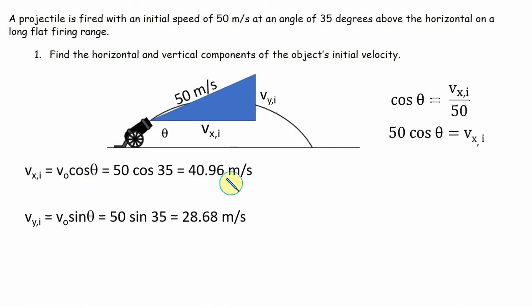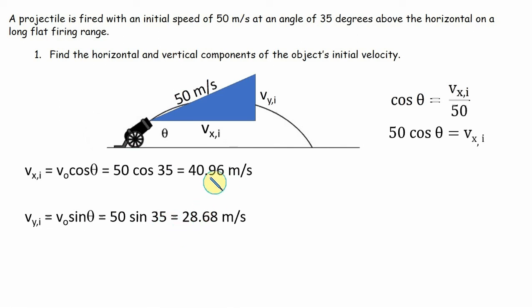Sometimes you may not want to round these off. I'm going to try to round all these numbers to two decimal places, but if you don't want to do that, just use 50 cosine 35 or 50 sine 35 all the time, or store it in your calculator to avoid rounding errors. If you round to something like 41 and 29, you're going to compound your rounding errors later on if you're not careful.